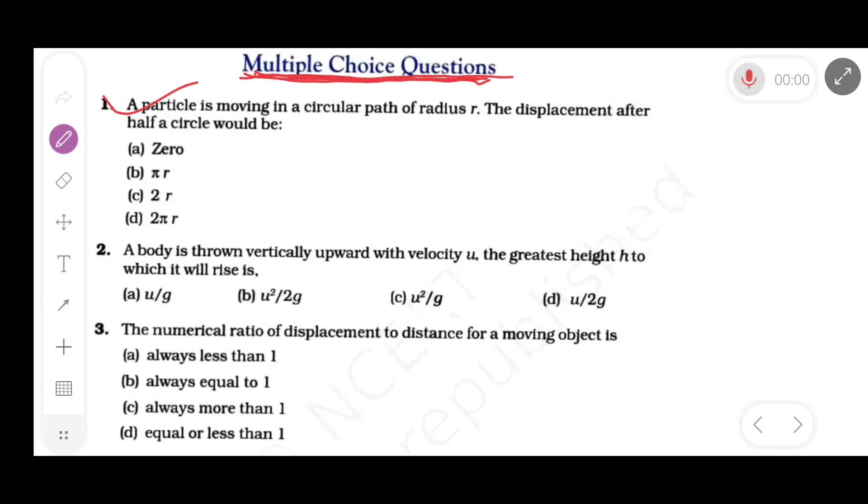Now the first question: A particle is moving in a circular path of radius r. The displacement after half a circle would be. This is a circular path. A particle is moving in this path. Suppose A is the initial point and after half rotation B is the final point. So displacement is the shortest distance between A and B, and this is the diameter. As radius is r, so diameter is 2r. So correct option is C, that is displacement is 2r.